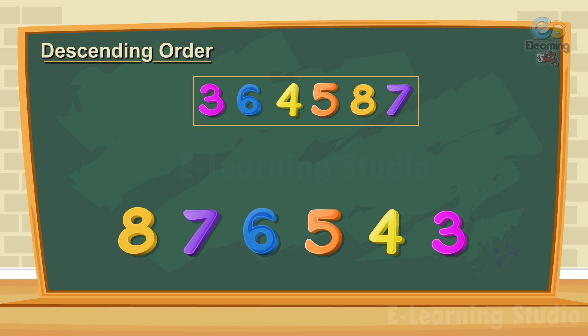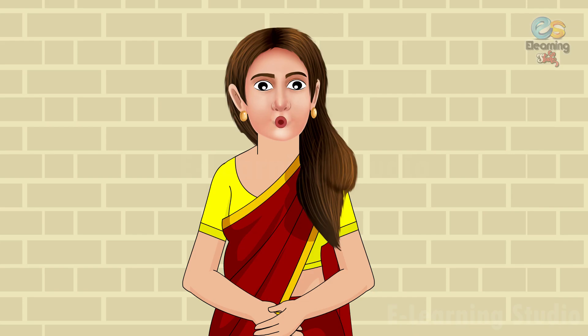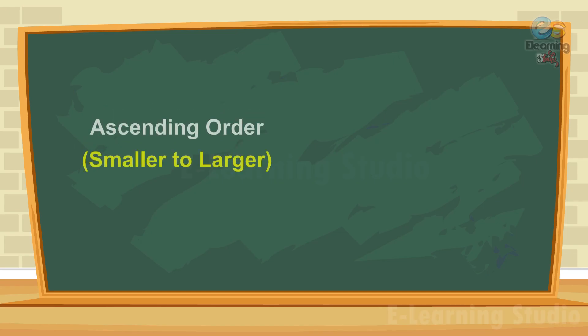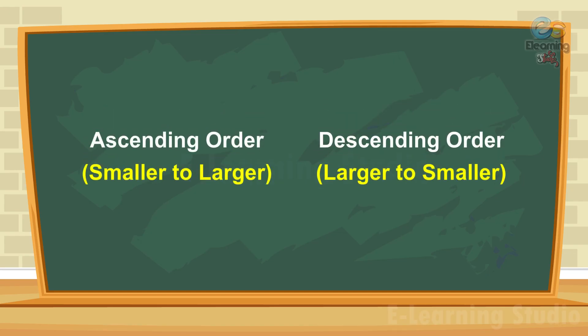We continue until we reach the smallest number, which is 3. So the descending order will be: 8, 7, 6, 5, 4, 3. We hope you have understood the concept of ascending order and descending order clearly. Now you can practice this.